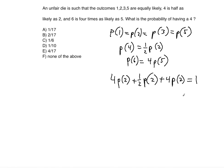That sum equals 1, because the sum of probabilities of all possible outcomes must equal 1. So now we solve for P(2), because once we find P(2) we can find P(4), which is what the question is asking.